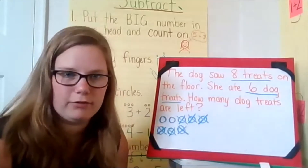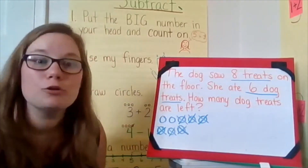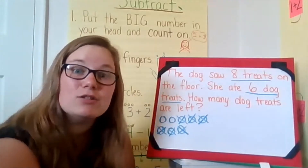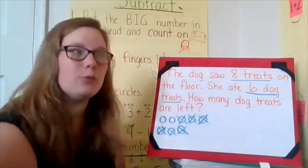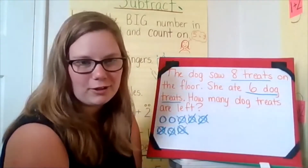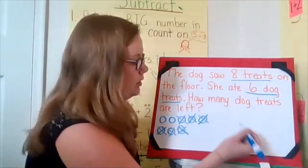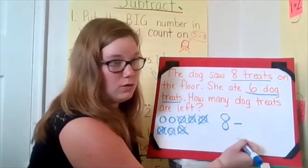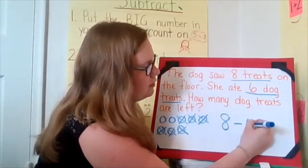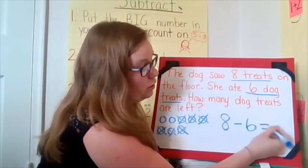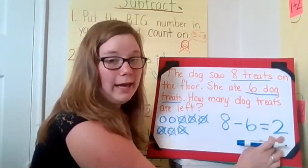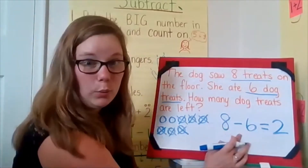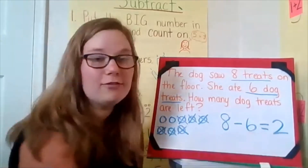Now that I crossed out six circles, how many circles are left? Two. One, two. There are two circles left. So that means our answer is two dog treats. There were two dog treats left over. So my whole number sentence is going to say eight minus six equals two. We started out with eight, we took away six, so we minus or subtracted, that left us with two.